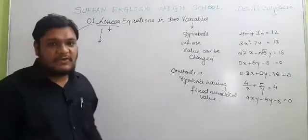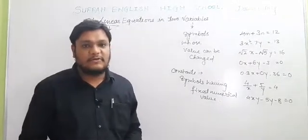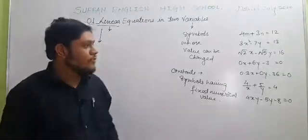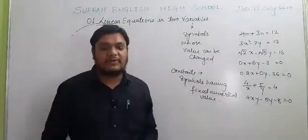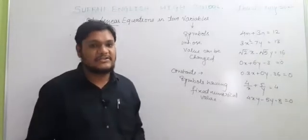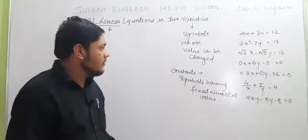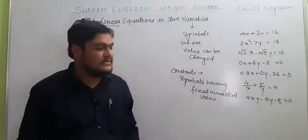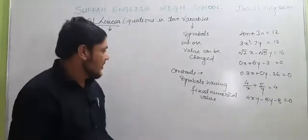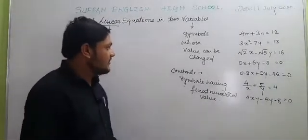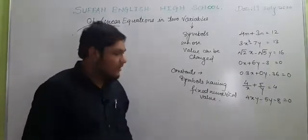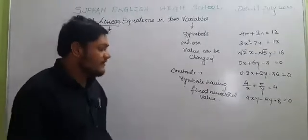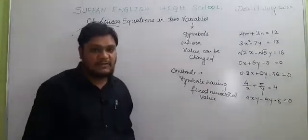We know that in a linear equation in 2 variables, a variable is a symbol whose value can be changed, or a symbol to which any numerical value can be assigned. Constants, opposite to variables, are symbols having a fixed numerical value.